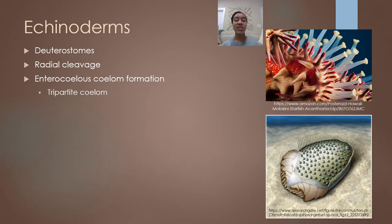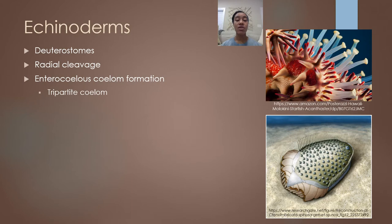Echinoderms are deuterostomes, and these are the first deuterostomes we're covering this semester. Just as a reminder, they're deuterostomes because their blastopore later becomes their anus rather than their mouth. Echinoderms undergo radial cleavage and they also undergo enterocoelous coelom formation. Their coelom is composed of three parts and it's called a tripartite coelom.